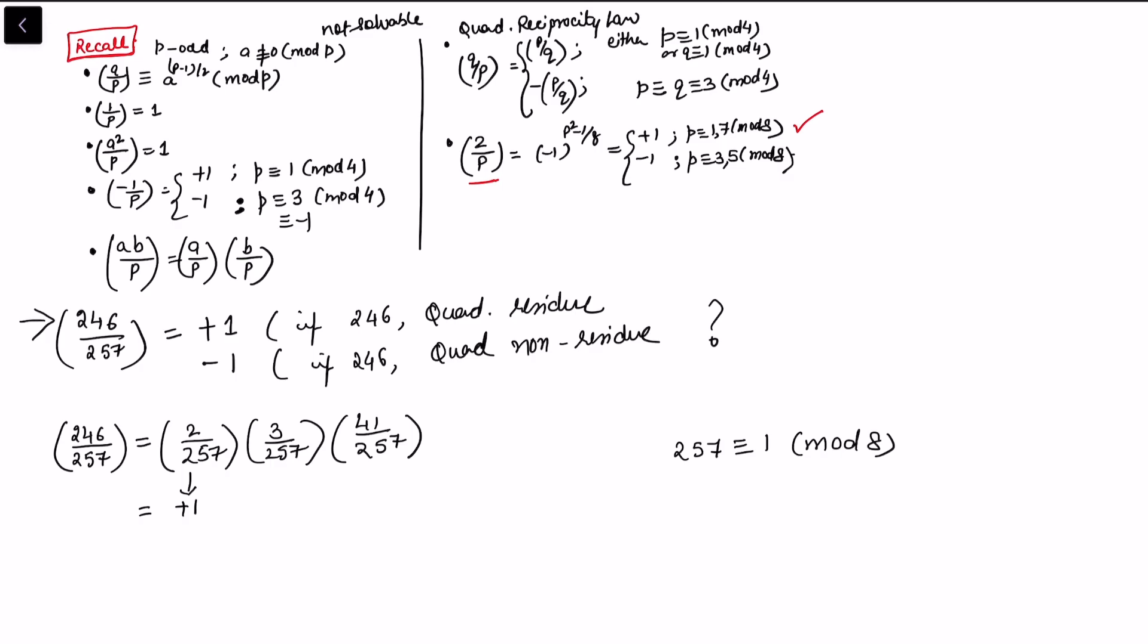We can also notice that (3/257)—if I just look at this separately—is the same as (257/3). I can use reciprocity using the quadratic reciprocity law, because if p and q are both congruent to 3 mod 4, then (q/p) = -(p/q).